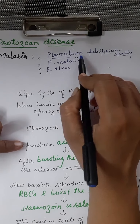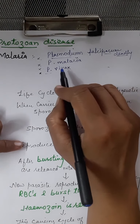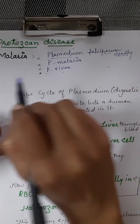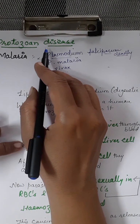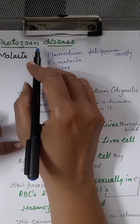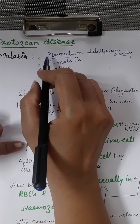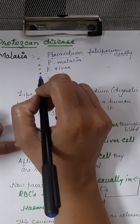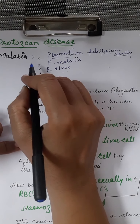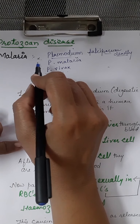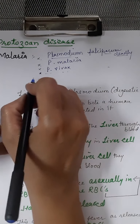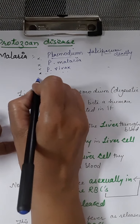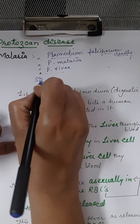First of all, we should know at which stage the Plasmodium enters into our body. Plasmodium enters into the human body at the stage called the sporozoite.